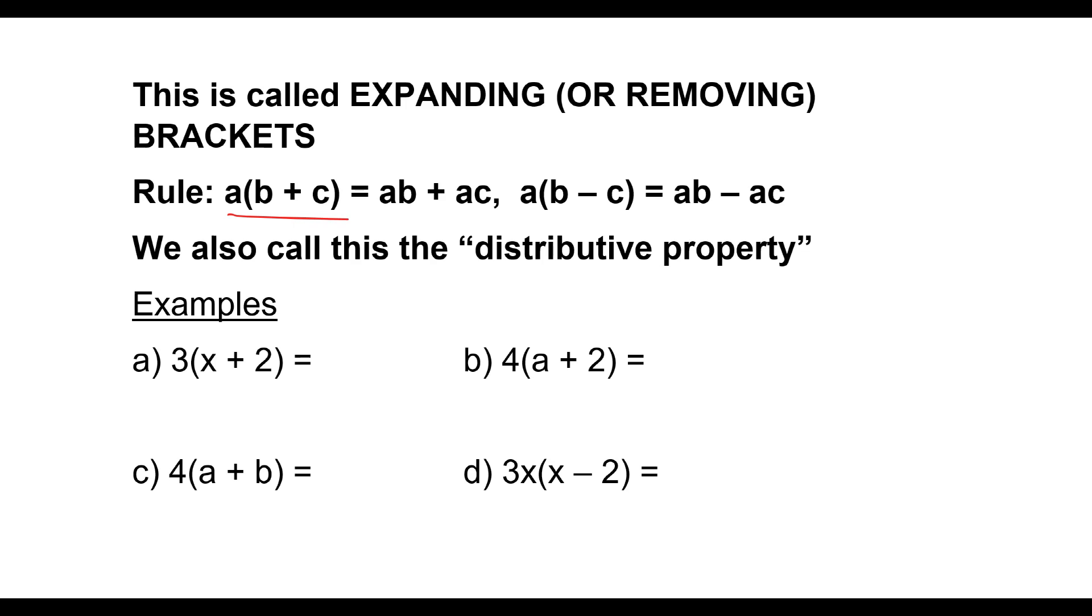A times bracket B minus C is A times B, take away A times C. This is also called the distributive rule, or distributive property.